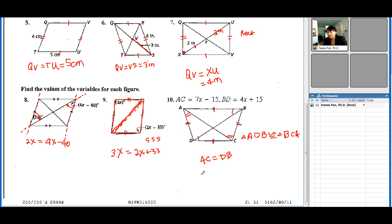From here you have an equation to solve: 7X minus 15 equals 4X plus 15. So those are pretty easy and simple so far.